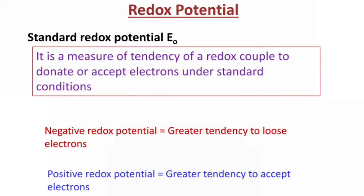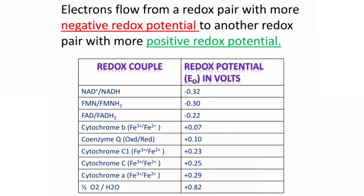Always, electrons will flow from a Redox Pair with more negative Redox Potential to another Redox Pair with more positive Redox Potential. For examples of some Redox Couples: NAD+/NADH pair has Redox Potential of minus 0.32 volts. Oxygen and Water has Redox Potential of plus 0.82 volts. The remaining pairs have Redox Potential in between these two. So NAD+/NADH pair is more negative and Oxygen/Water pair is more positive.